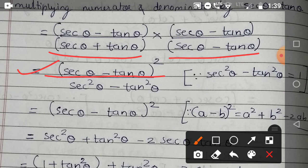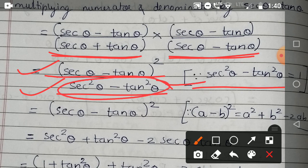This is the identity a² - b² = (a + b)(a - b), so the denominator becomes a² - b². Then we have identity sec²θ - tan²θ = 1, so the denominator becomes 1.